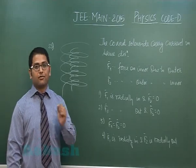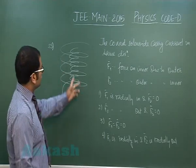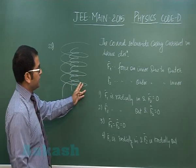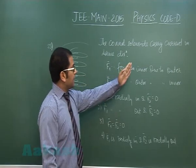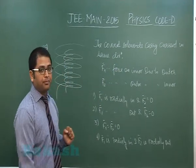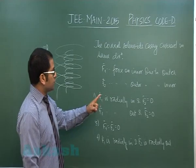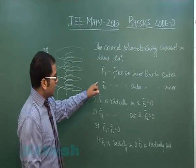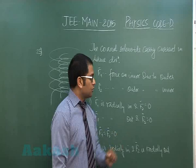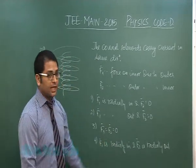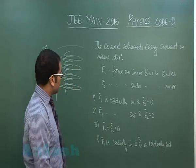The 23rd question is again from magnetism and there are two long coaxial solenoids and they carry current in same direction. And if F1 is the force on inner due to outer and F2 force on outer due to inner, we got to choose the correct option.